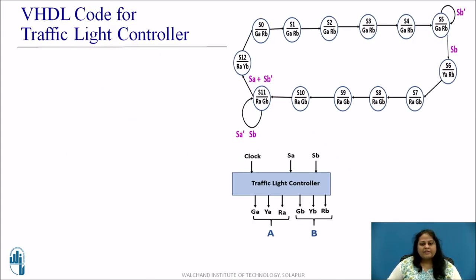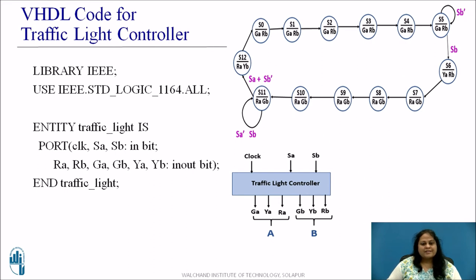Now, let us write the VHDL code for the traffic light controller discussed based on the state diagram obtained. Library IEEE declaration is done first and the package STD logic 1164 of IEEE is used. The entity is then declared. It consists of 3 input ports clock SA and SB as in bits and 6 output ports RA, RB, GA, GB, YA, YB and they are declared as out bits.